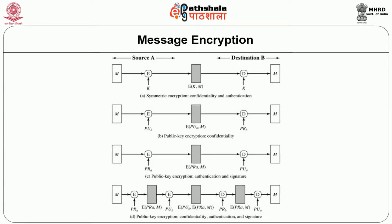First of all we would start with message encryption and how it can be used for confidentiality, authentication and digital signature. We have seen symmetric encryption in which the sender and receiver both use the same key. We can always achieve confidentiality and authentication through symmetric encryption. As you can see in the block diagram, message M is input to the encryption algorithm along with the key, and output is an encrypted message. What we have achieved is confidentiality — the message is encrypted with the key so nobody else can see it. And if the receiver is able to retrieve the message with the key, then authentication is also performed.